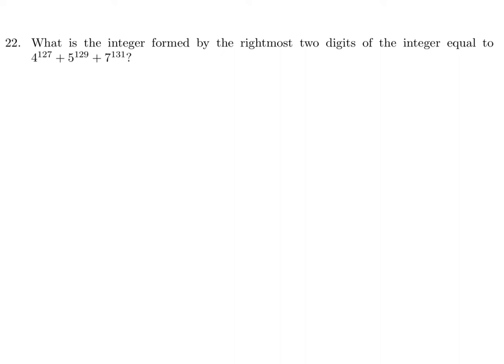What is the integer formed by the rightmost two digits of the integer equal to 4 to the power of 127 times 5 to the power of 129 times 7 to the power of 131? These kinds of questions are very important in math contests — they may seem daunting or impossible, but you have to look for a pattern.